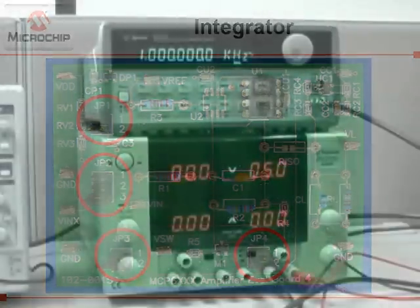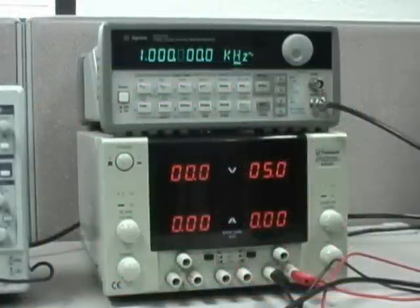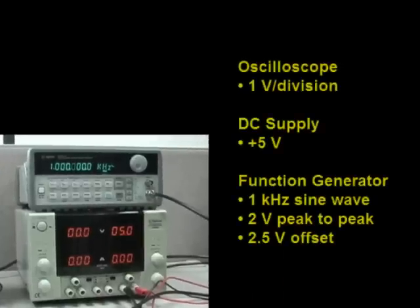We set the oscilloscope at 1 volt per division. The DC power supply is 5 volts. The output of the function generator is set with peak-to-peak voltage equal to 2 volts, offset equal to 2.5 volts, and a sine wave frequency of 1 kHz.